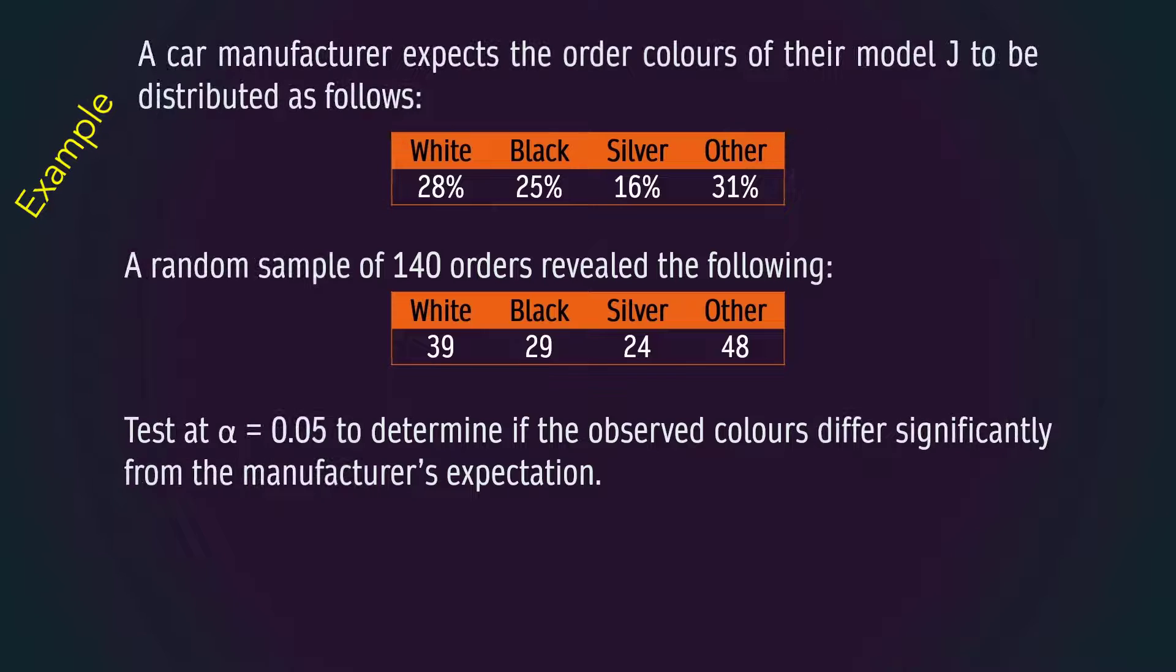In this first example, a car manufacturer expects customers will order colors of their model J according to this distribution. They selected a random sample of 140 orders as shown in this second table. We want to test at the 5% significance level if there is a statistically significant difference between the observed and expected frequencies.